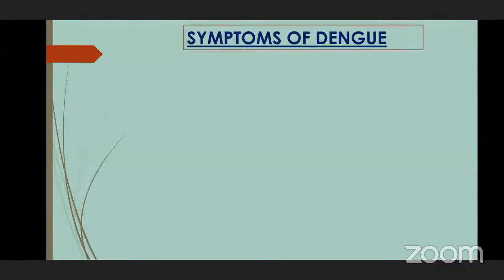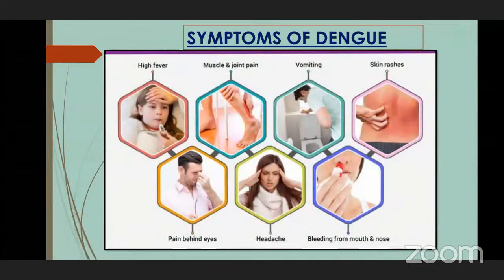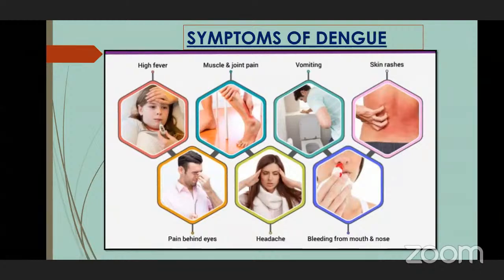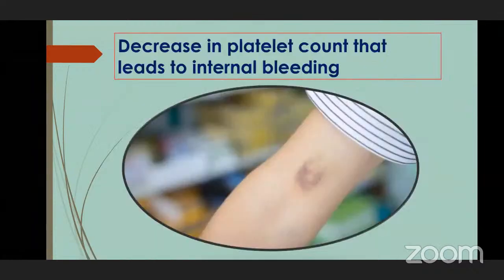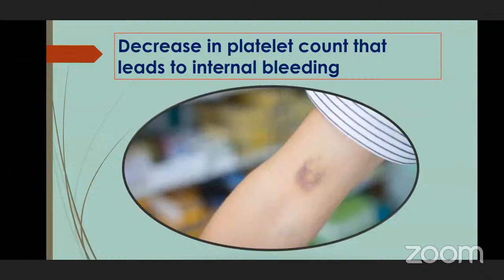The symptoms of dengue are: the patient has high fever, muscle and joint pain, vomiting, rashes on the skin, and pain behind the eye sockets. The person may have severe headache and bleeding from mouth and nose. There is also a decrease in platelet count which leads to internal bleeding. To avoid dengue, you should avoid waterlogged places, keep water clean at your home, and don't allow mosquitoes to lay their eggs.